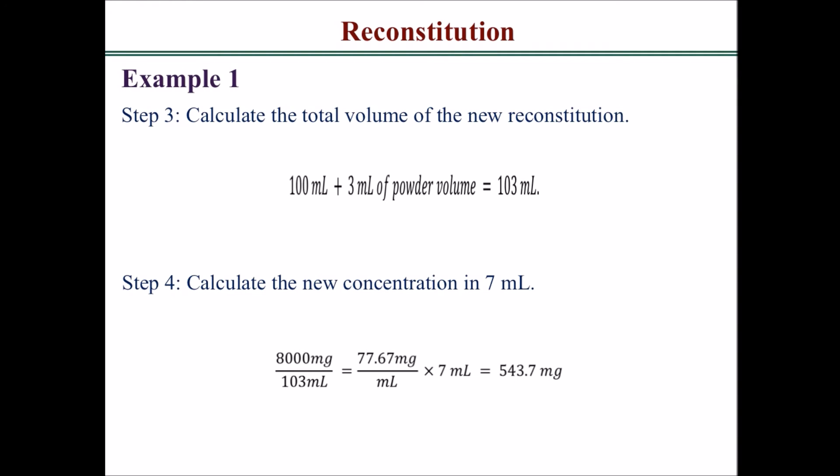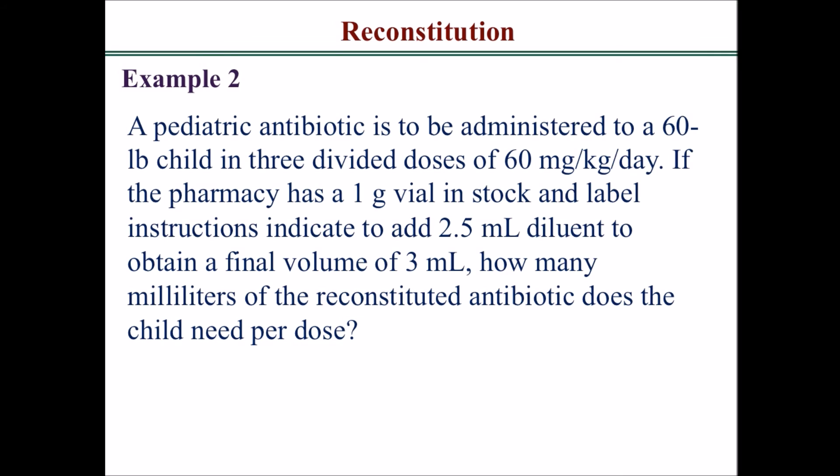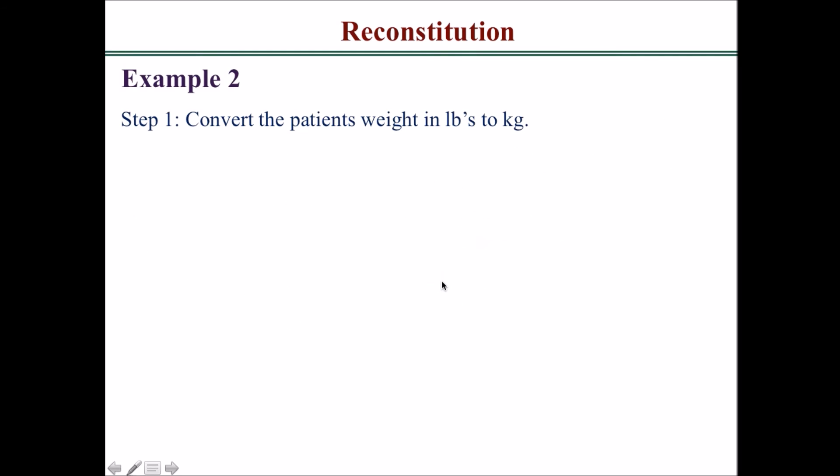Let's move on to Example 2. A pediatric antibiotic is to be administered to a 60-pound child in three divided doses of 60 milligrams per kilogram a day. If the pharmacy has one gram vials in stock and the label instructions indicate to add 2.5 ml diluent to obtain a final volume of 3 ml, how many milliliters of the reconstituted antibiotic does the child need per dose? Step one: convert the patient's weight in pounds to kilograms.